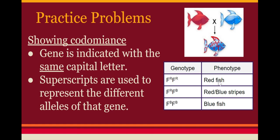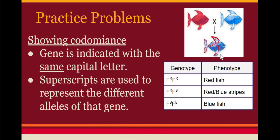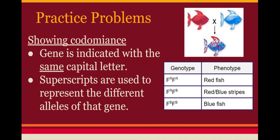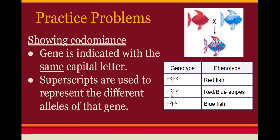Looking at genotypes to get different phenotypes: an all-red fish is diploid, so it has two copies of the red allele — F-R, F-R. The blue fish is homozygous for the blue allele — F-B, F-B. The heterozygote has one copy of the red allele and one copy of the blue allele — F-R, F-B — and you can always identify the heterozygote in co-dominance because it shows both traits. Both proteins get transcribed and translated, so you see them both.